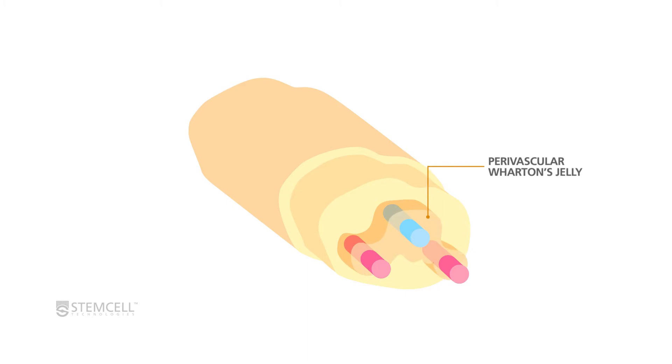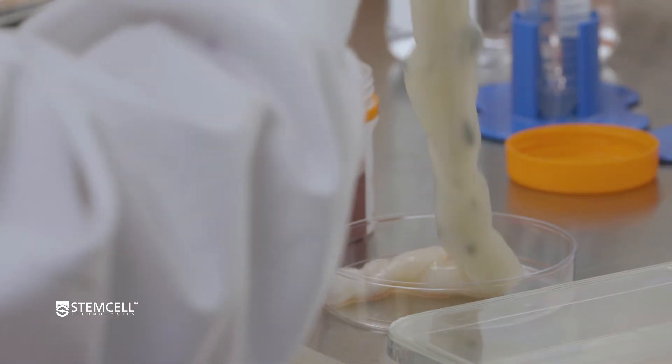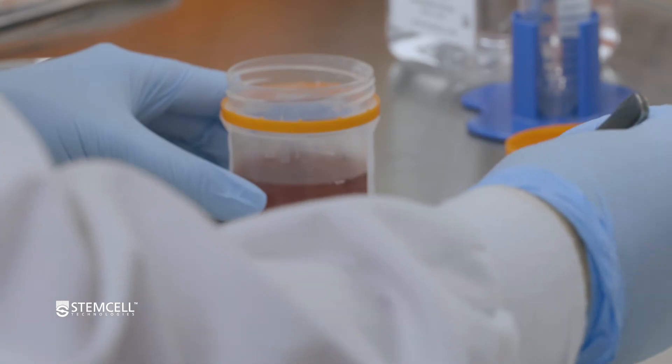We are now ready to dissect and prepare Wharton's jelly tissue from the whole umbilical cord. Wharton's jelly is the gelatinous tissue surrounding the vessels in the umbilical cord. The tissue directly surrounding the vessels is called the perivascular Wharton's jelly and contains the highest concentration of MSCs. For highest MSC per gram tissue yield, it is recommended to use the perivascular Wharton's jelly. Umbilical cord must be dissected and plated within 36 hours of birth for optimal cell recovery.